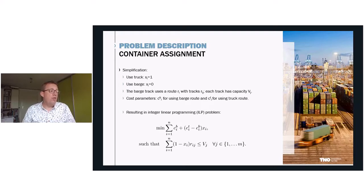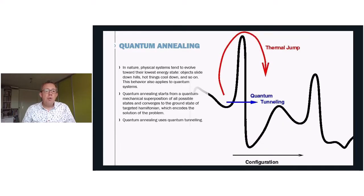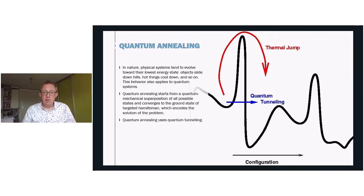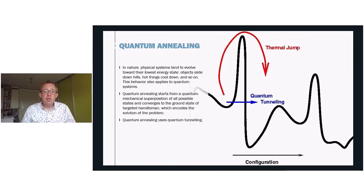In the second row of this problem, we see the capacity constraints. Such ILP problems can be solved using several kinds of solvers, heuristics and meta-heuristics. We will use quantum annealing here, which can be seen as a hardware implementation of simulated annealing — a meta-heuristic. The problem needs to be formulated as a Hamiltonian, which can be seen as an energy landscape. In nature, physical systems tend to evolve towards their lowest energy state. Quantum annealing starts from a quantum mechanical superposition of all possible states and converges to the ground state of a targeted Hamiltonian, which encodes the solution of the problem. It uses quantum tunneling, finding the solution faster than in a simulated annealing environment.